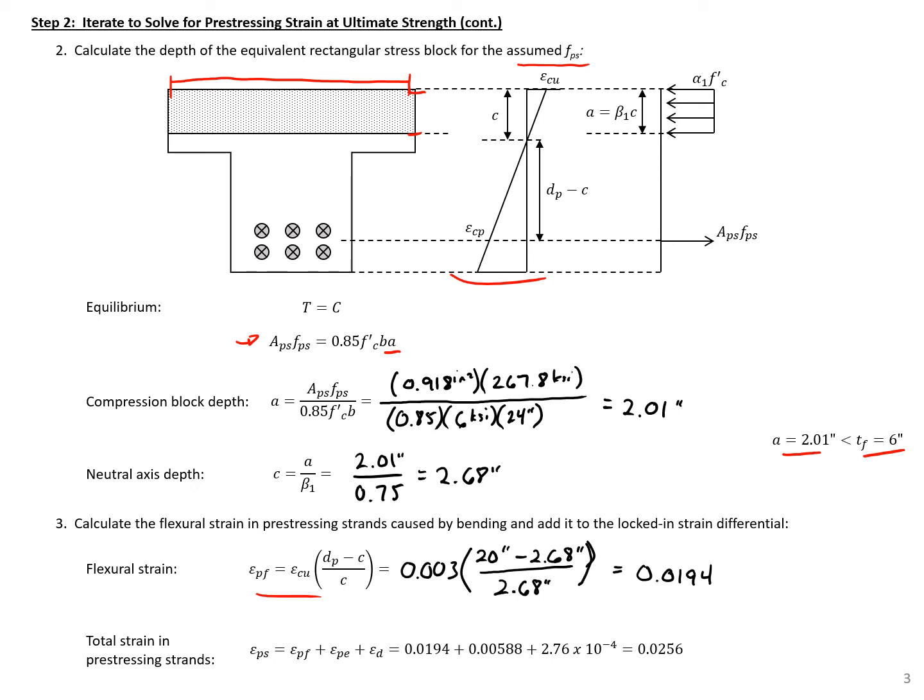We need to add this flexural strain to our strain from our pre-stressing and that decompression strain to get the total strain in the pre-stressing strands. So we can find adding in our epsilon P sub E and epsilon sub D, we'll get a total strain in the strand equal to 0.0256.